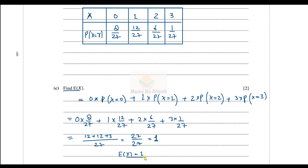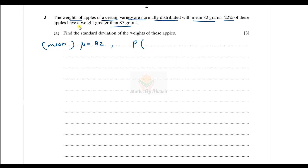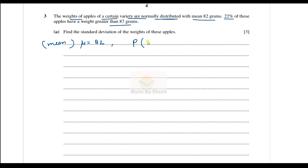Here is question number three. The weights of apples of a certain variety are normally distributed. As soon as you get 'normally distributed,' you should think of μ and σ. What is given: μ = 82 grams, and 22% of these apples have a weight greater than 87 grams — so P(X > 87) = 0.22.